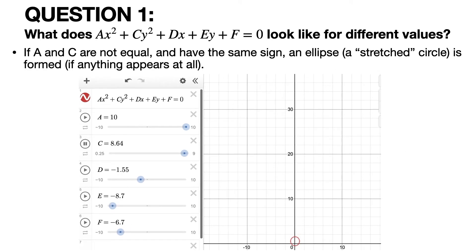If A and C are not equal, an ellipse is formed, and it's more and more stretched out as A becomes further away from C or vice versa, as you can see in this animation.